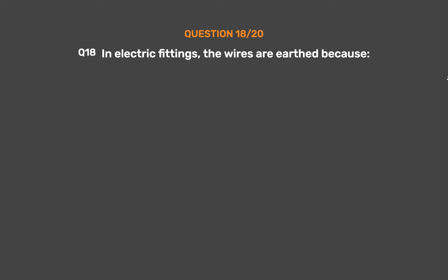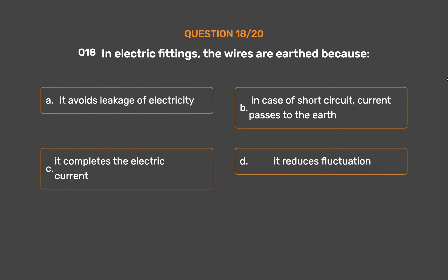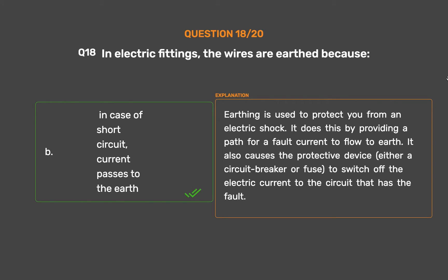Question number 18. In electric fittings, the wires are earthed because: Option A: It avoids leakage of electricity. Option B: In case of short circuit, current passes to the earth. Option C: It completes the electric current. Option D: It reduces fluctuation. The correct answer is Option B: In case of short circuit, current passes to the earth. Earthing is used to protect you from an electric shock by providing a path for a fault current to flow to earth. It also causes the protective device, either a circuit breaker or fuse, to switch off the electric current to the circuit that has the fault.